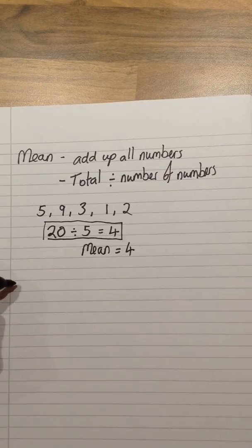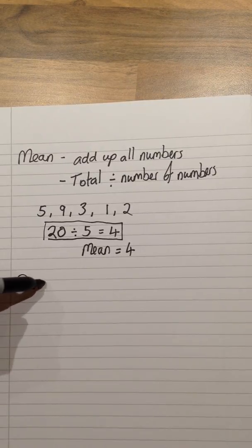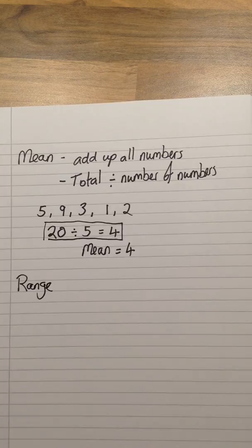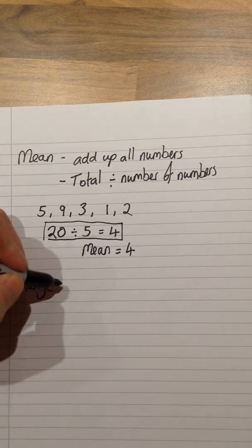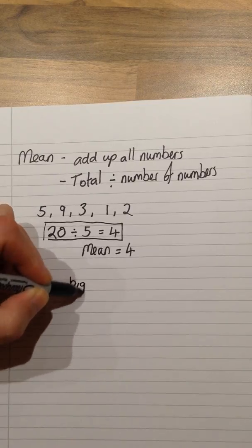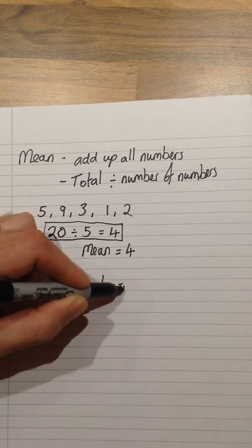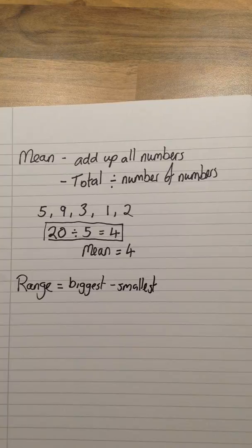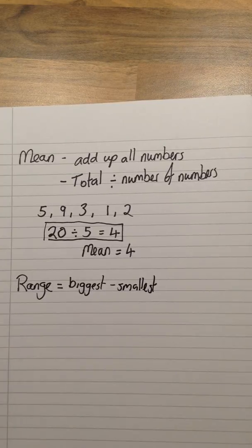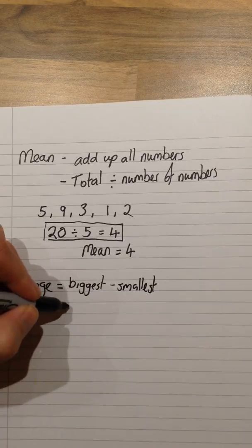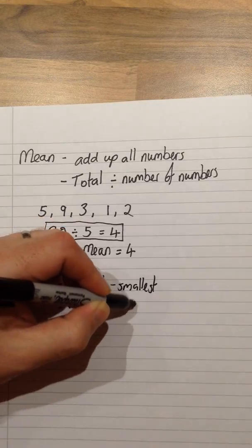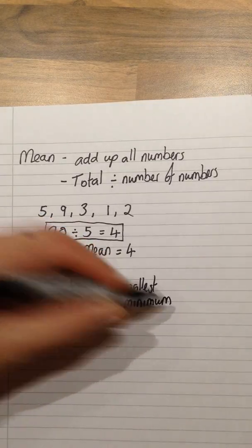The final step to do with averages is the range. Now this is not an average, it's actually known as a measure of spread. So it tells us how spread out the numbers are in a list. In order to calculate the range, it's actually a calculation. We would need to do the biggest number take away the smallest number. Because we are going to be using this a little bit later on with various different diagrams, I'm actually going to start also referring to this as the maximum take away the minimum.